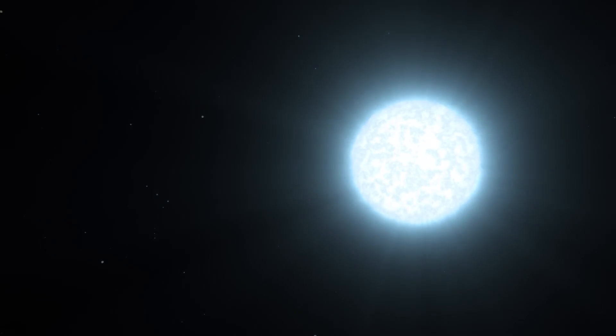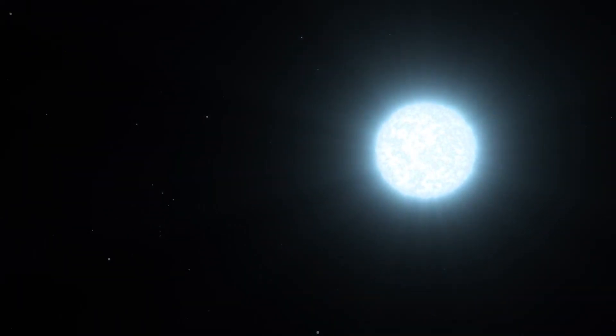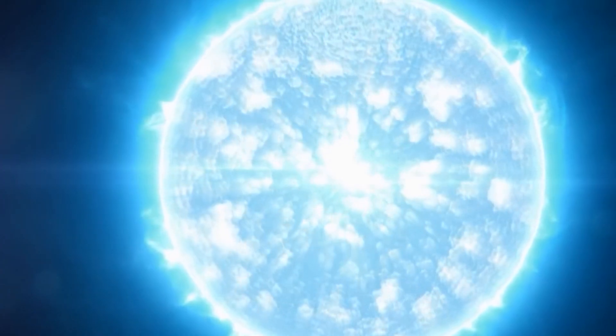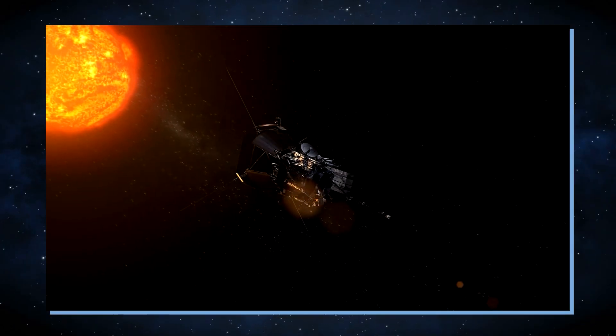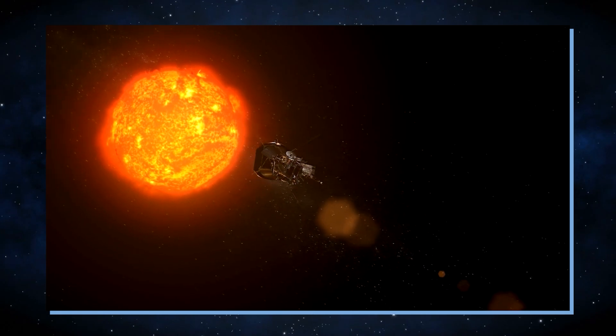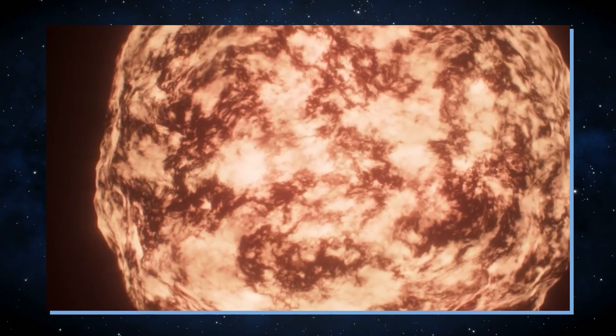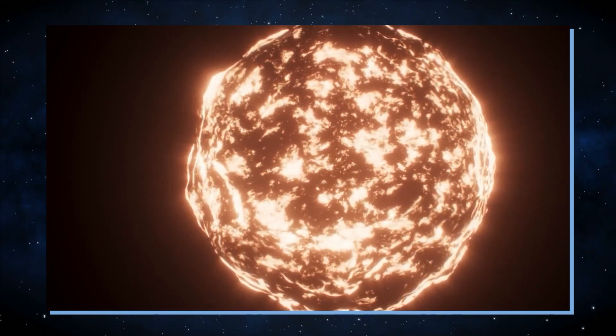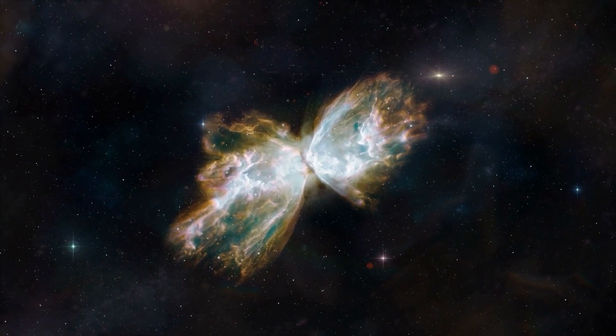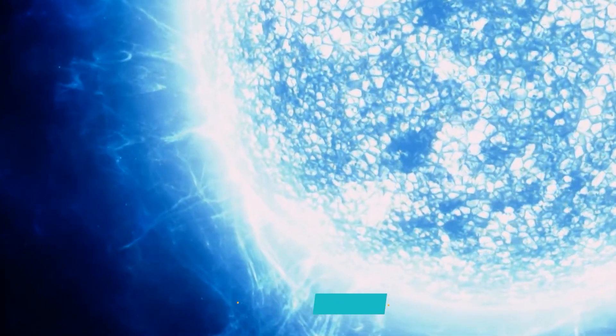Stars, like all celestial bodies, undergo a life cycle, and their fate is largely determined by their overall mass. For instance, considering our Sun as an example, it is expected to evolve into a red giant in the later stages of its life cycle. Subsequently, it will transform into a planetary nebula before ultimately becoming a white dwarf.